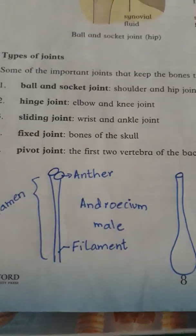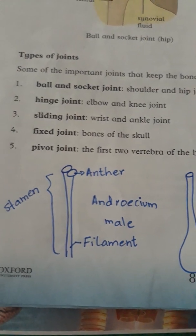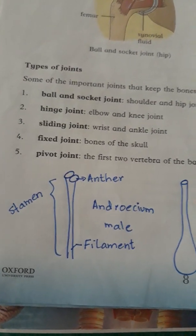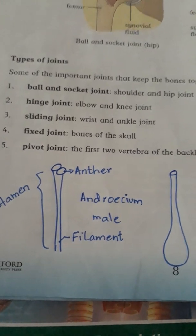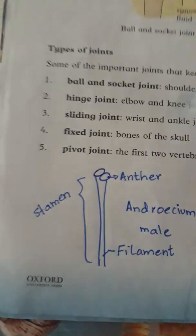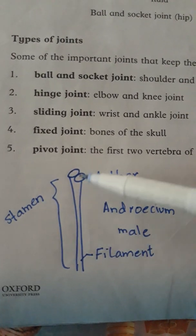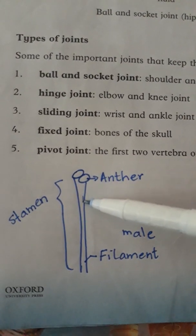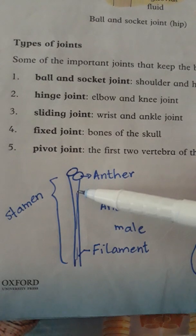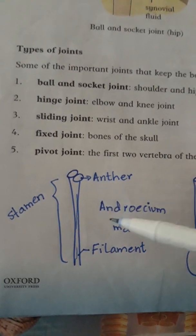Pollen grains are responsible for reproduction and pollination. Pollen grains are present everywhere and they are transported from one plant to another through wind, through insects, or through birds. Pollen grains are produced inside the anther, which is the male part of the plant. The function of the stamen — the male part — is to produce pollen grains.